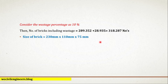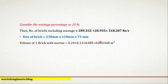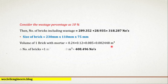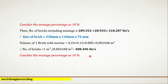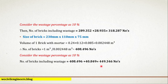Now let's take the size of brick as 230 mm by 110 mm by 75 mm, which is also a non-modular brick. The volume of one brick with mortar equals 0.24 multiplied by 0.12 multiplied by 0.085, which equals 0.002448 cubic meter. Therefore, number of bricks equals 1 cubic meter divided by 0.002448 cubic meter, which equals 408.496 numbers. Considering a wastage percentage of 10%, the number of bricks including wastage equals 449.346 numbers.